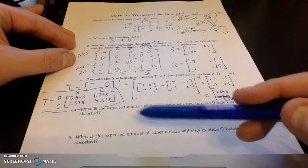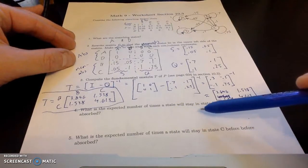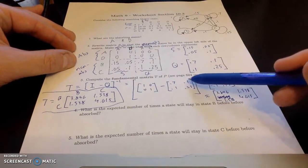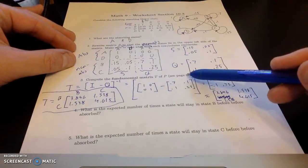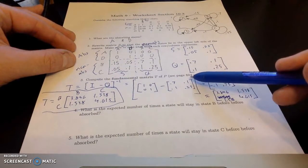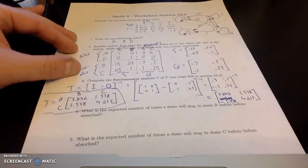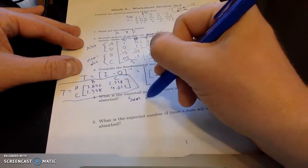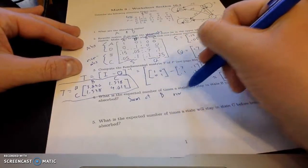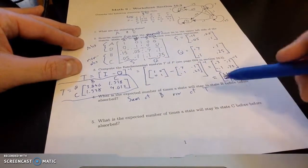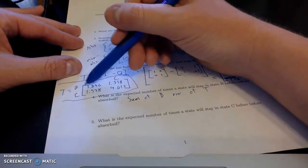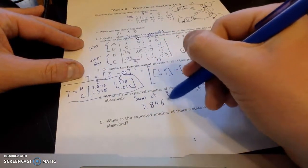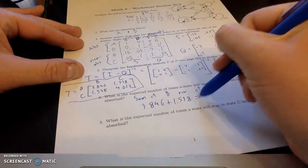So we can use this to answer questions like, what is the expected number of times a state will stay in B before being absorbed? And again, there's some good highlighted and boxed important parts of 10.3 around page 604, or just scroll through 10.3 if you have the electronic version. But we need to take the answer for this, which is the sum of the B row of T. So the expected number of states, I need to look at row B right here. So it's going to be 3.846 plus 1.538,